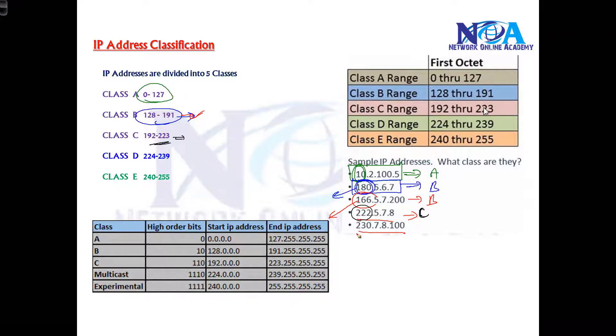Likewise, if I go with the last one, 230, 230 comes in the range of class D, so we'll say this address is a class D example. So only see the first portion. If you see the range here, the range is based on the first portion only.